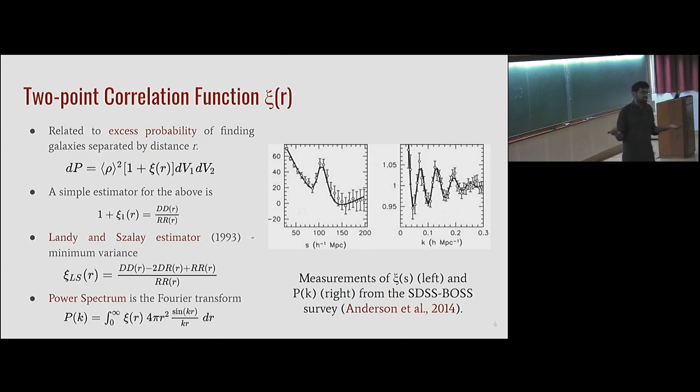Here in this image, this is the measurement of the ξ(s) or ξ(r) from a galaxy survey called the SDSS, the Sloan Digital Sky Survey. As you can see, there is this peak around 100 h inverse megaparsecs. This peak is called the baryon acoustic peak.